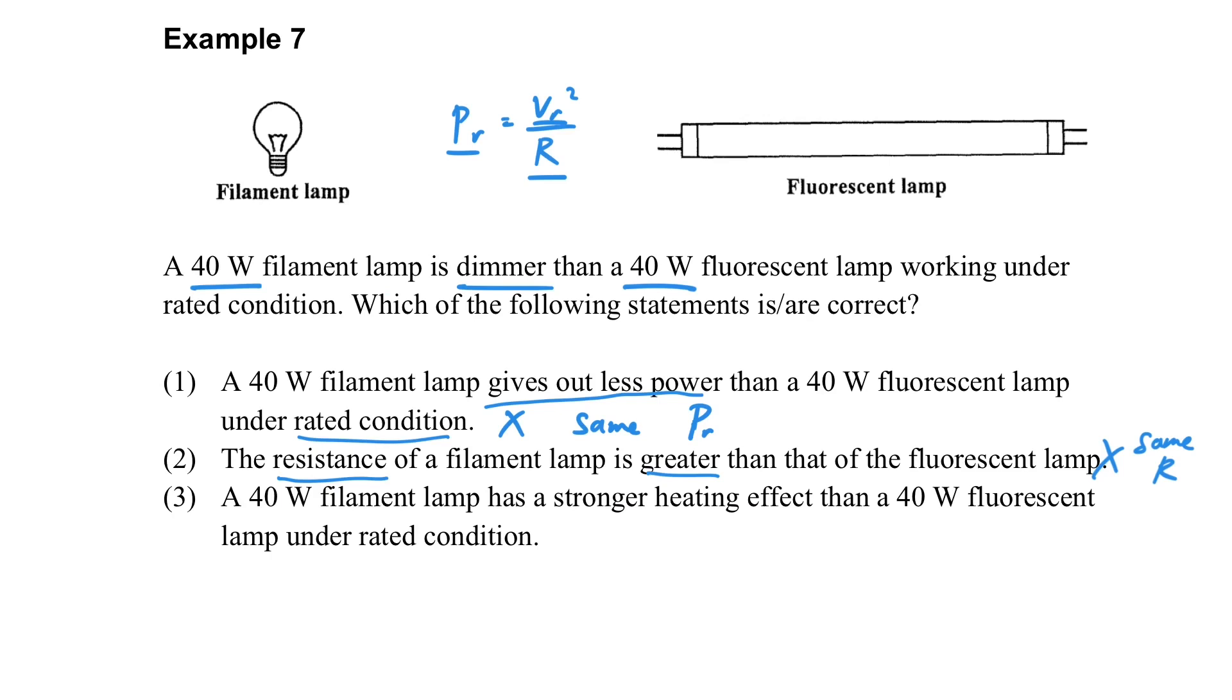How about the last one? The filament lamp has a stronger heating effect. This is true, because the question states that it is dimmer. That means some of the energy is lost as heat. This explains why the heating effect is stronger, and that's why it is dimmer.